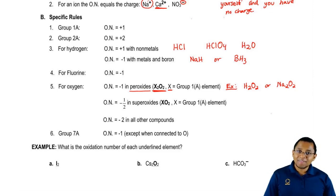Now oxygen will be negative a half when it's a superoxide. A superoxide has the formula XO2, where X again is a group 1A element. So for example, you could have sodium superoxide or lithium superoxide.